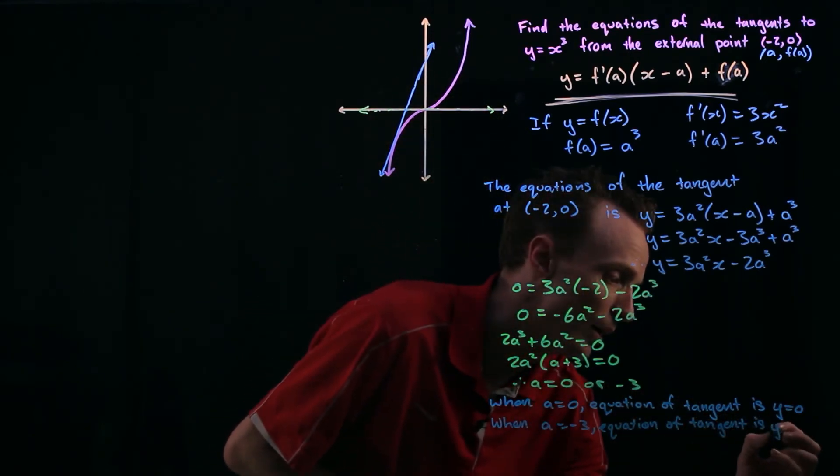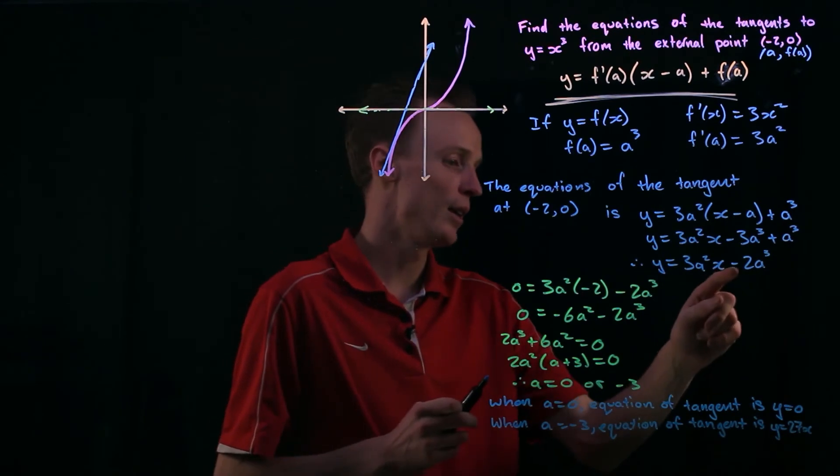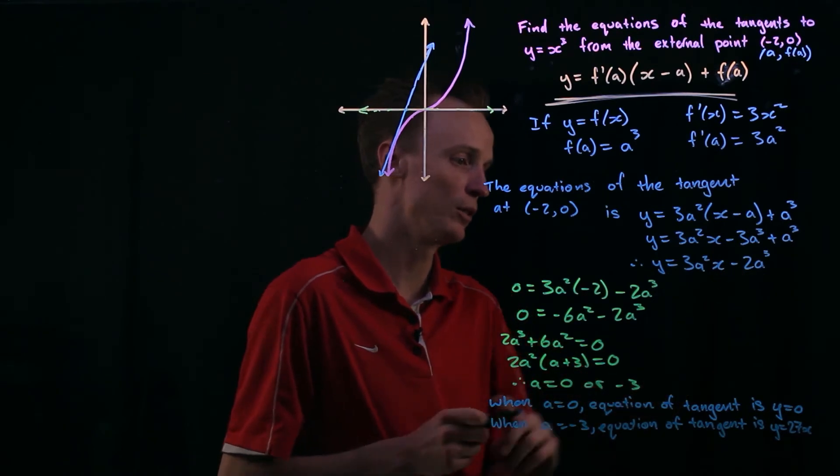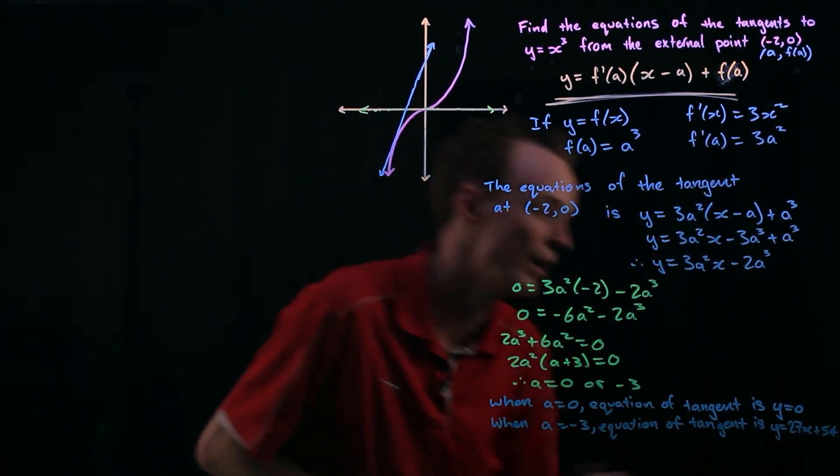So y equals 27x. And then negative 3 into this will be negative 27 times negative 2 is positive 54. So plus 54 here at the end.